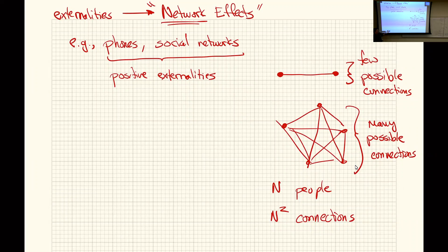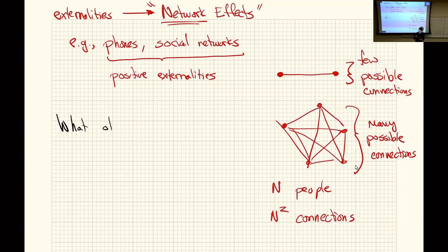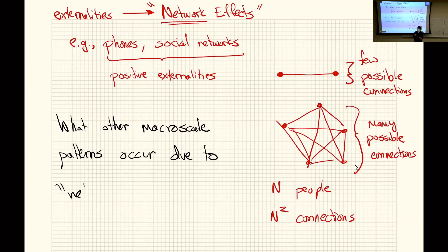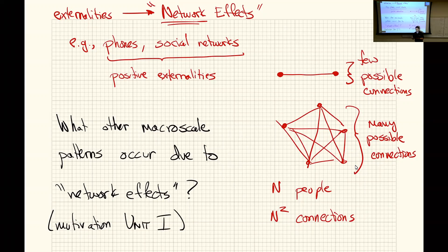Similarly, negative network effects like congestion occur when more people using a resource degrades the benefit for everyone else. The idea that benefits to an individual depend on how many others are participating is a simple example of why networks matter, and that motivates this entire unit on networks.